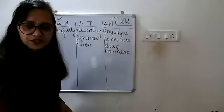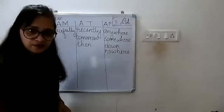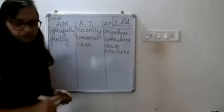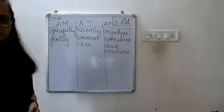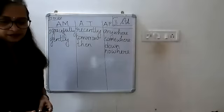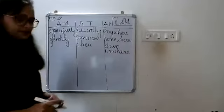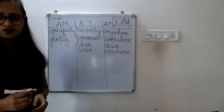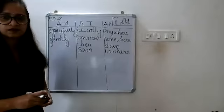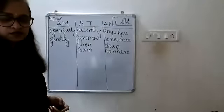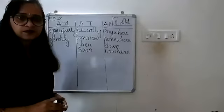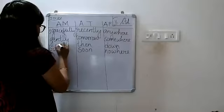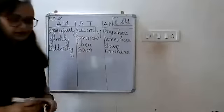Next word is 'gently' — adverb of manner, very good. Write it below 'gracefully' — G-E-N-T-L-Y. Next, 'soon' — adverb of time, write S-O-O-N in the middle column. Next, 'bitterly' — adverb of manner, write B-I-T-T-E-R-L-Y under the manner column.